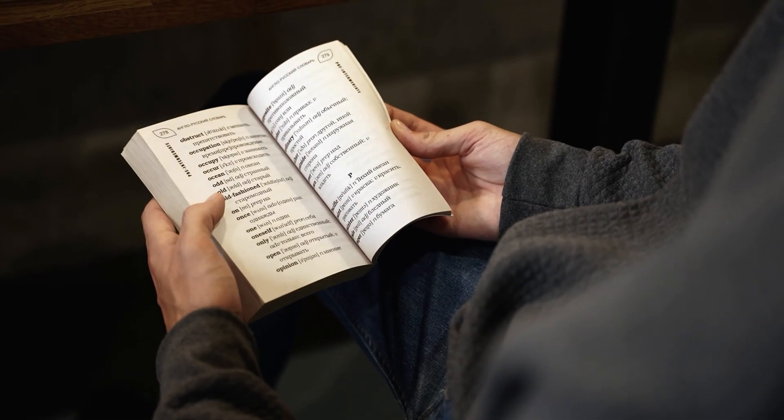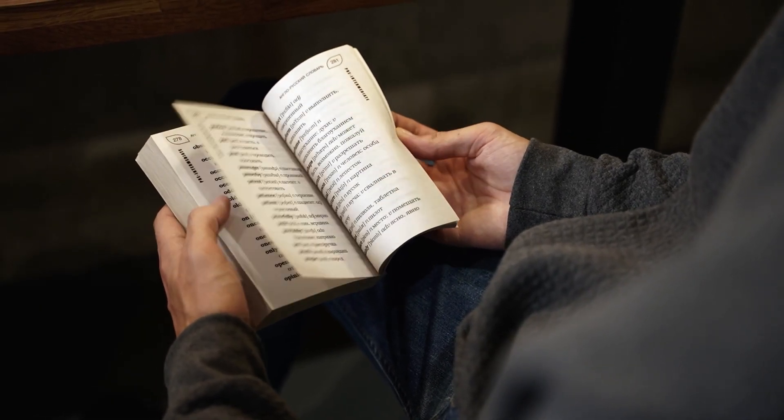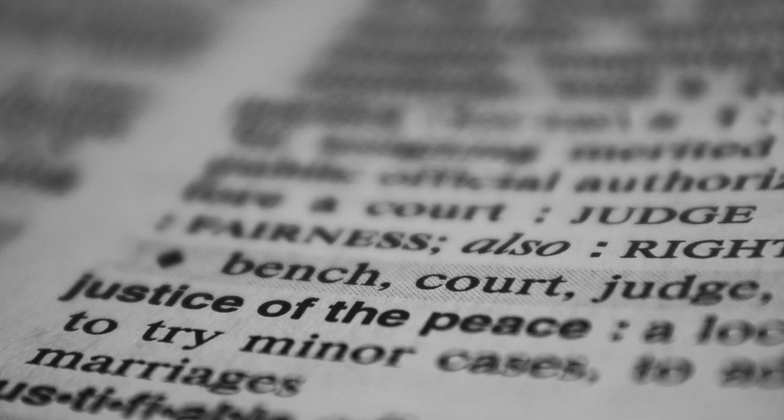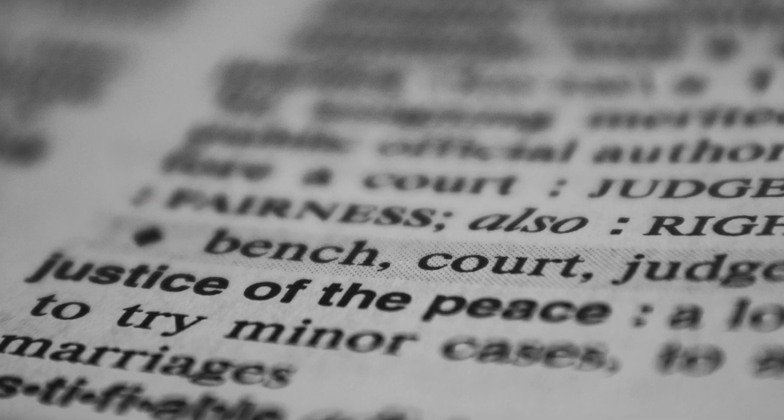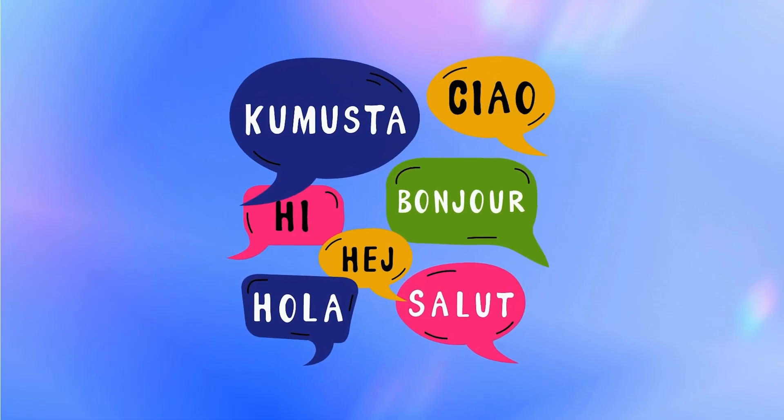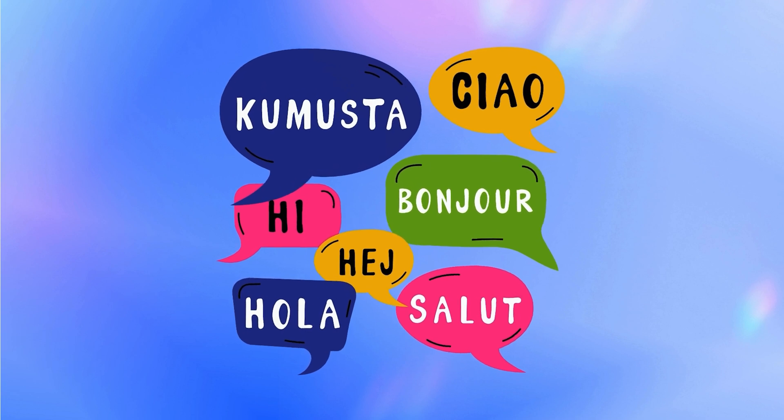Translation tools have always been there. You can think of them as the digital evolution of traditional dictionaries, helping us search for word meanings or figure out how to say something in another language. Every time we use conventional translation tools to translate a sentence or even an entire document, we're essentially asking the software to match words with their equivalents in another language based on a predefined index. The problem is that while the words may be correct, the tone, style, and context often get lost in translation, which means the result does not reflect the true meaning of the original text.